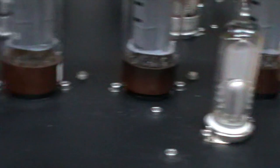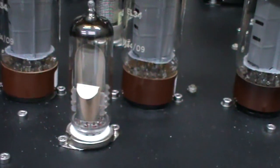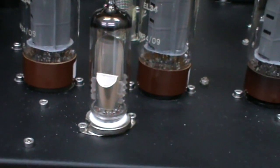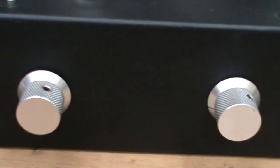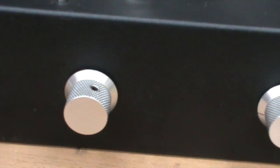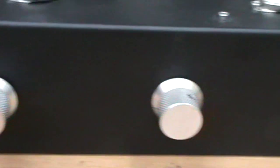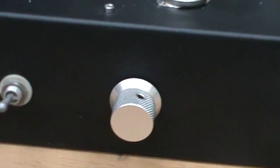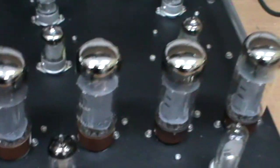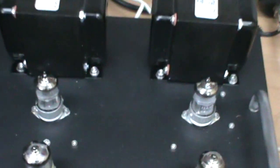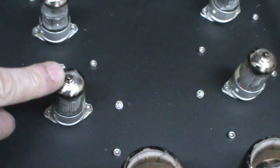EM81 tubes, which are magic eye tubes that act as VU meters. Then we have volume controls - really the gain potentiometers of each channel - and a simple power switch. That's about it.